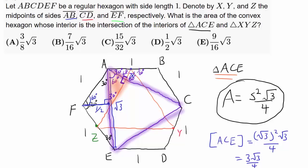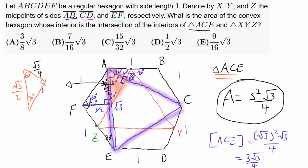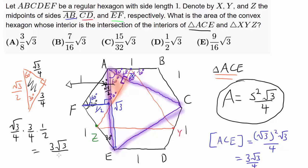To find the area of this 30-60-90 triangle, we need base and height. The hypotenuse is √3/2. Drawing this triangle: we have 30, 60, 90 degrees, and the hypotenuse is √3/2. That tells us the short leg is √3/4, and the longer leg is √3/4 times √3, which is 3/4. So the area is √3/4 times 3/4 times 1/2, or 3√3/32.